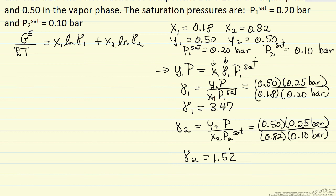One thing to note, of course, they're dimensionless. Second is they're both greater than one and this corresponds to the fact that we have a positive deviation from Routh's law.